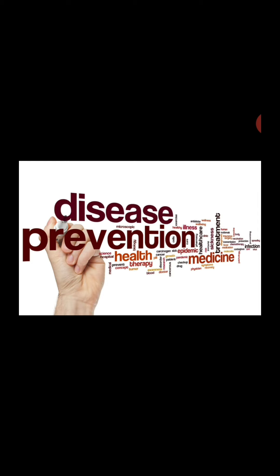Some steps by which we can prevent diseases: First, we should keep our house very clean and hygienic — it should be well ventilated, meaning airy, with many windows so air can pass through. Second, we should not let stagnant water accumulate in our surroundings, as still water collected in holes or any place in the house can be a breeding ground for mosquitoes, flies, and other insects.